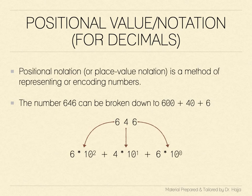Consider the number 646. In our decimal system, we can break this down into 600 plus 40 plus 6. The left-most digit 6 isn't just a 6, it represents 600. This can be calculated by multiplying 6 by 10 raised to the power of 2.